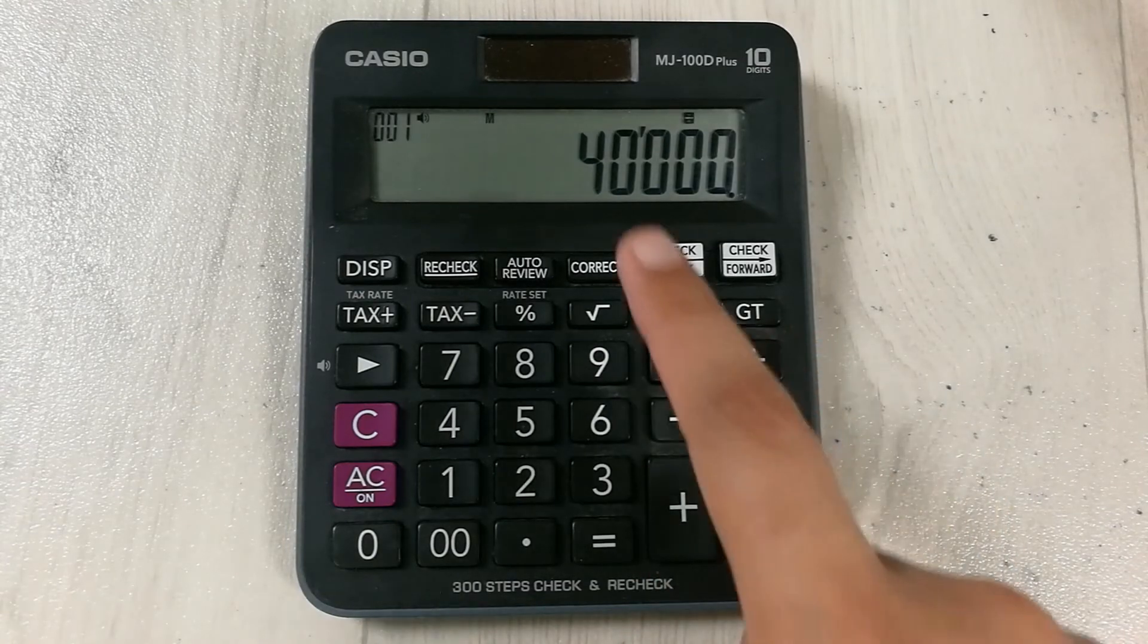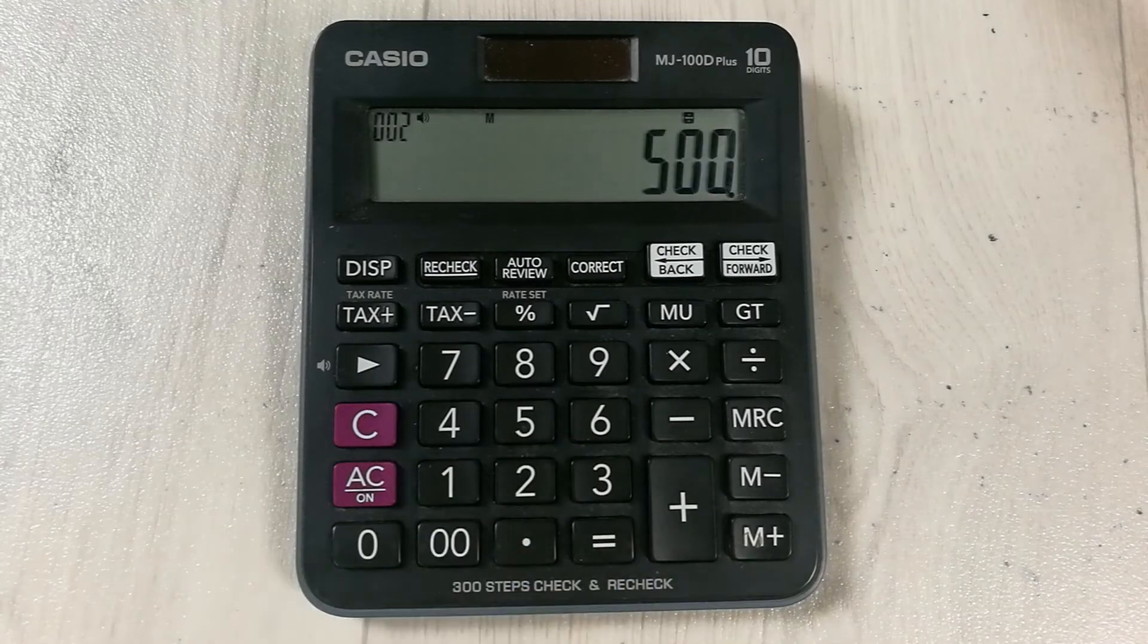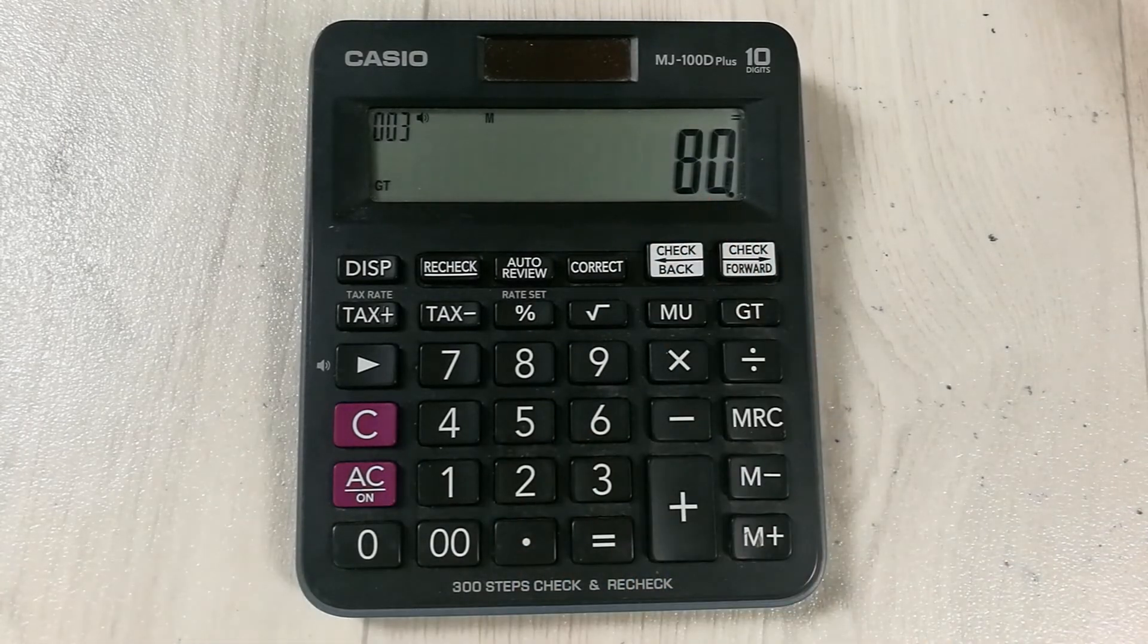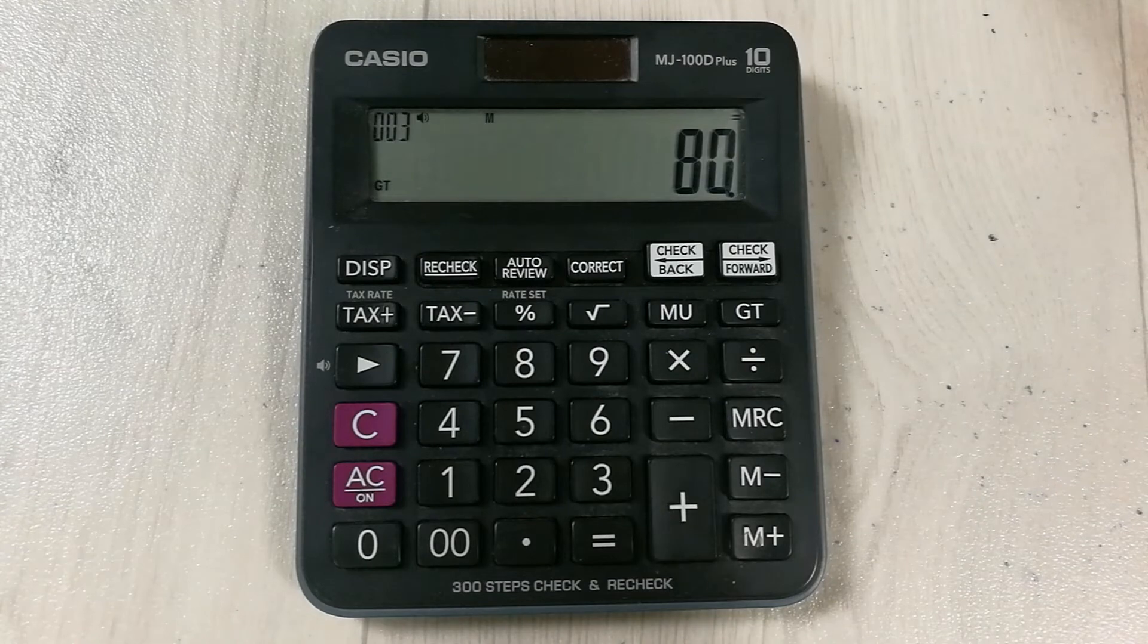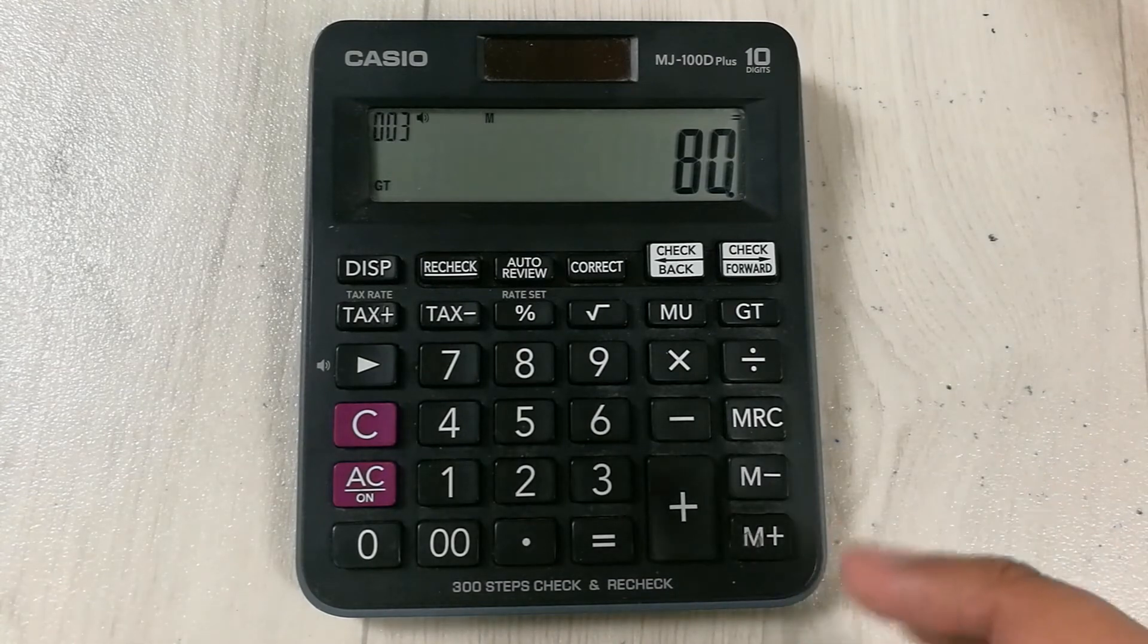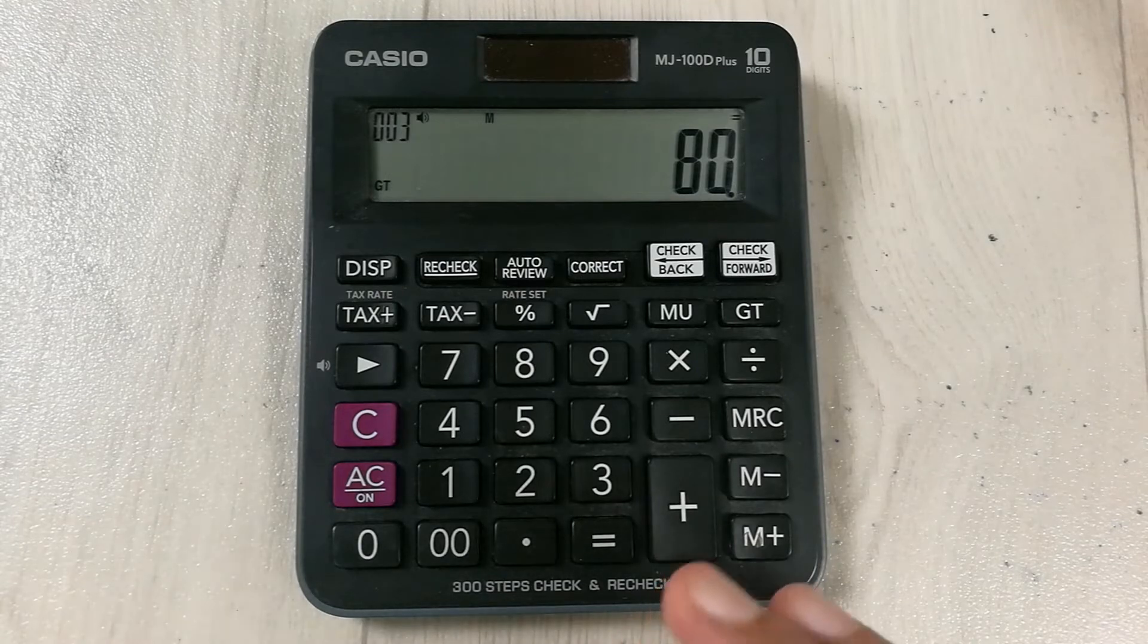We divide it with 500, so divided by 500, then we press equal. Here is our answer: 80 dollars or 80 rupees is our average selling price. This is how we can calculate the average selling price on calculator.